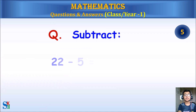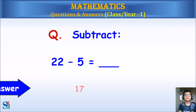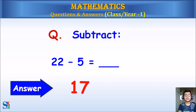Subtract: 22 minus 5 equals? Answer: 17.